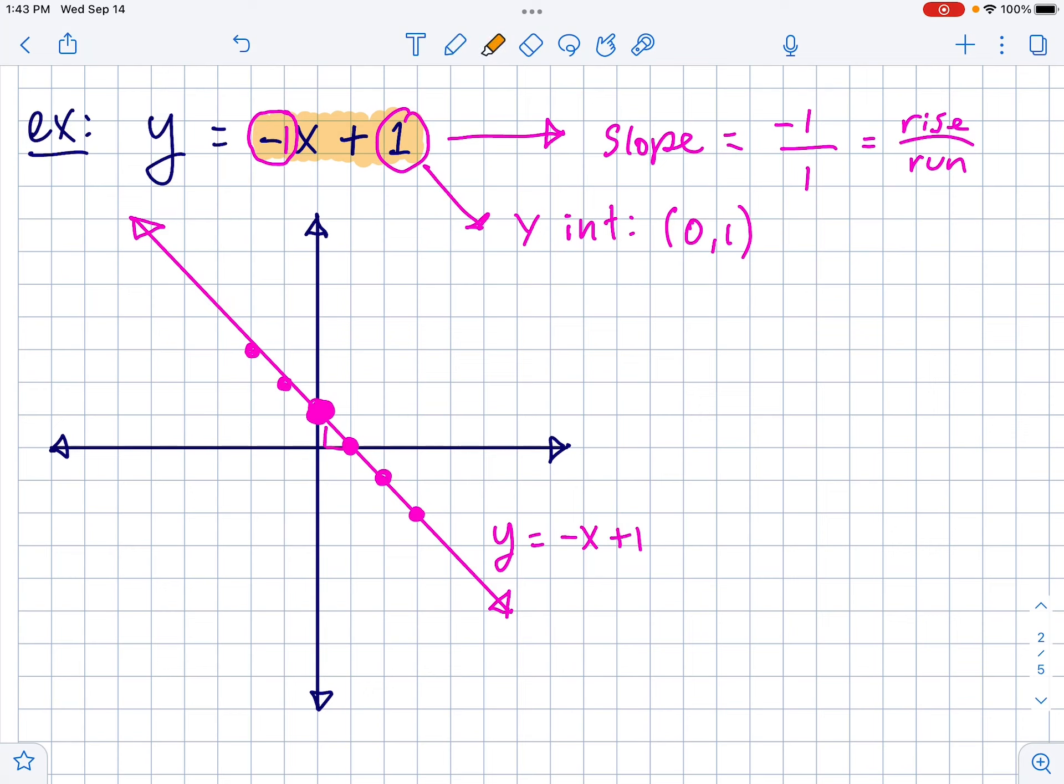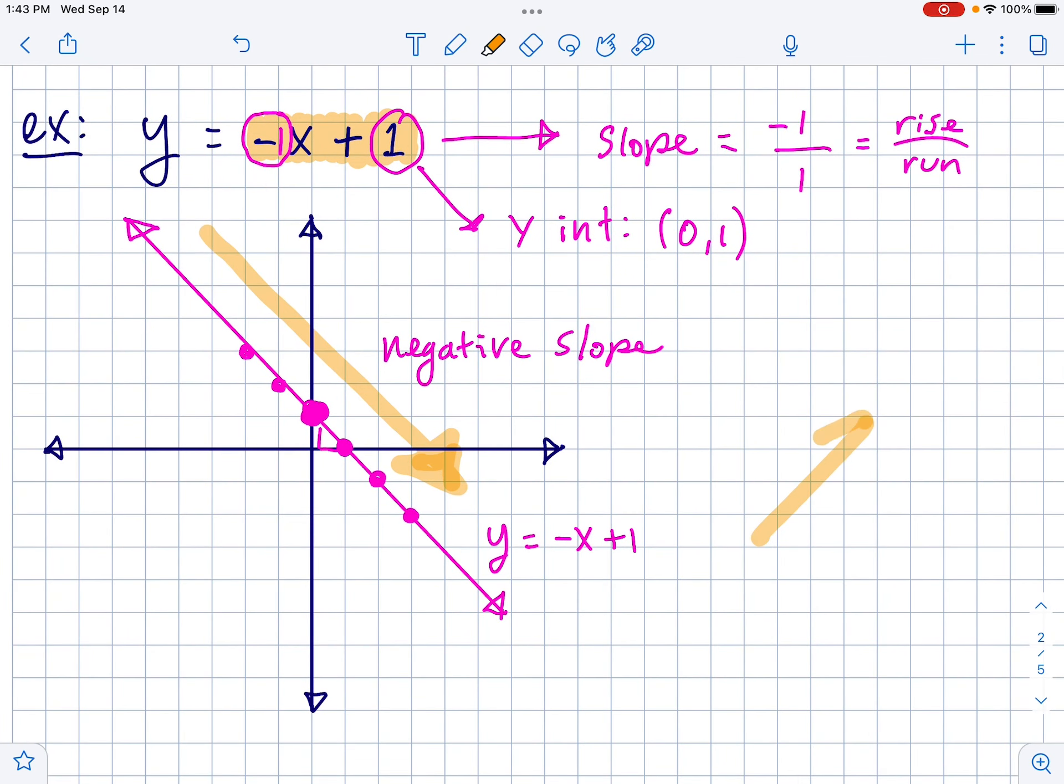Oh, in general, negative slopes have this kind of downhill trend to them. And then positive slopes would have like an uphill trend to them. Reading it left to right. Always left to right. So uphill, positive slope.